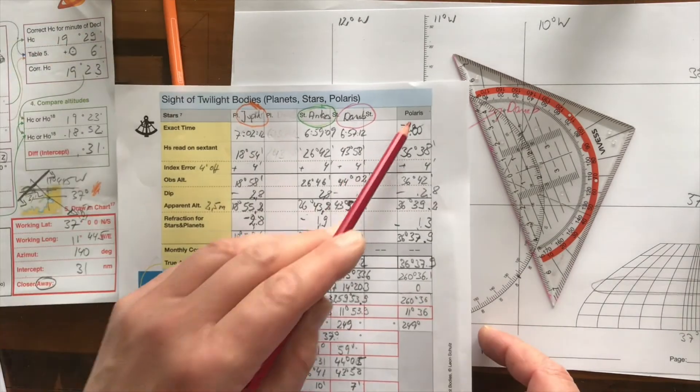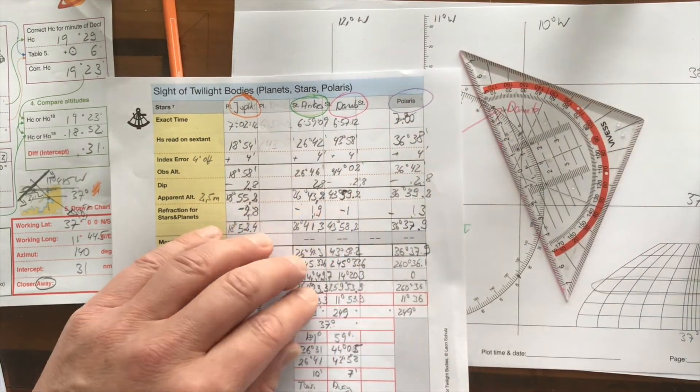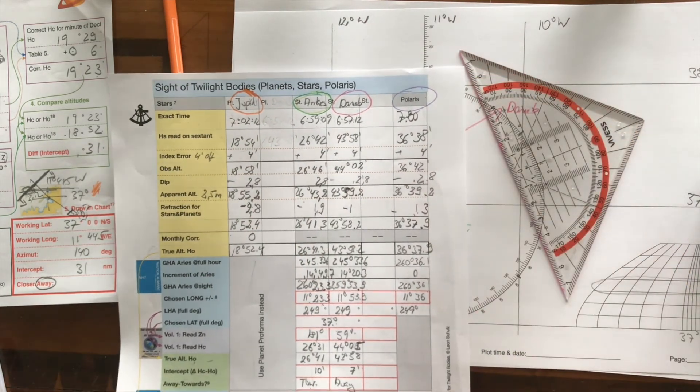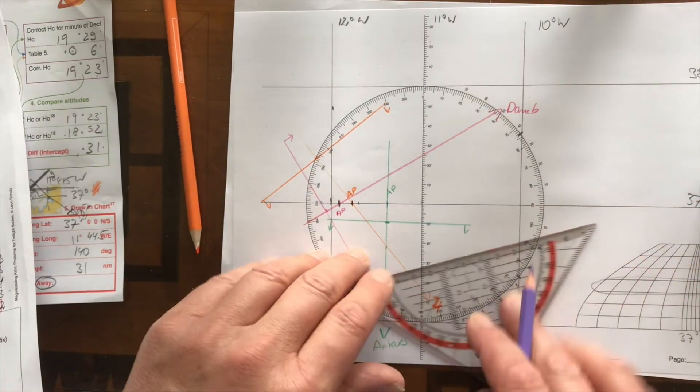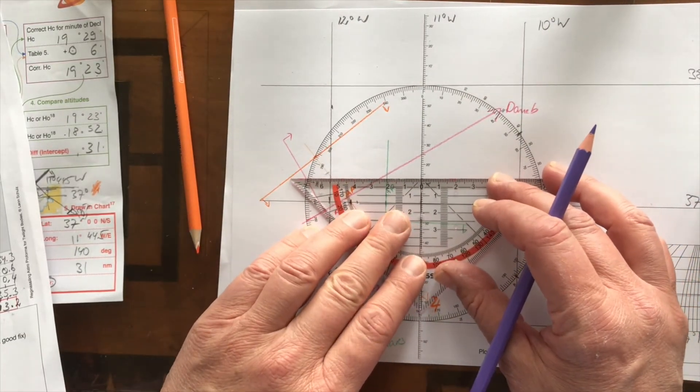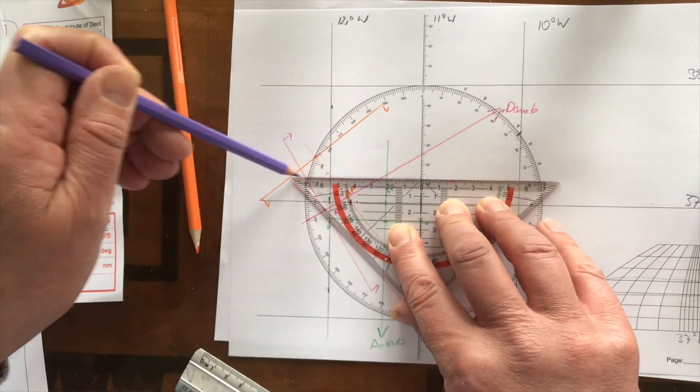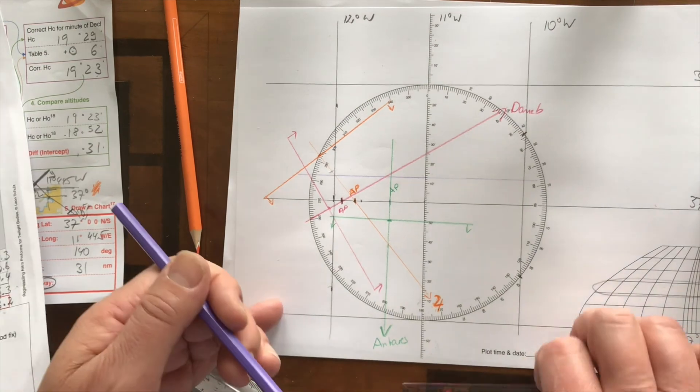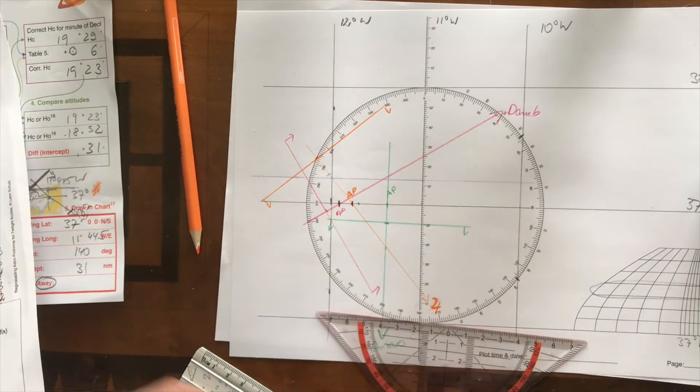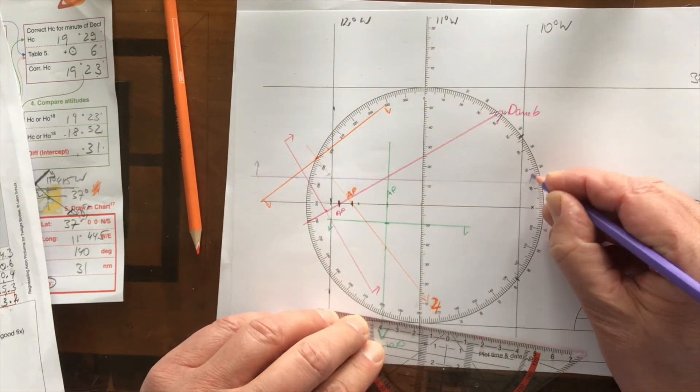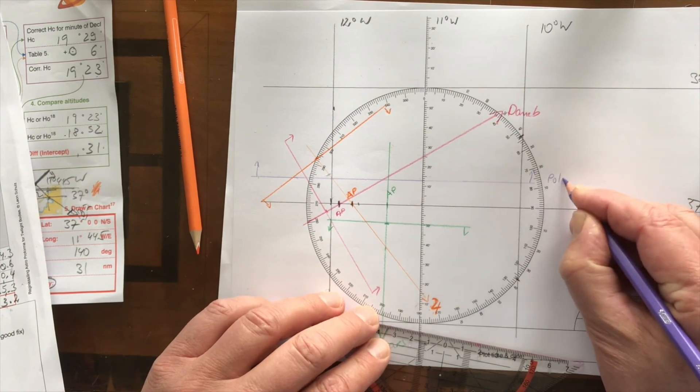Finally we have Polaris. Polaris gets a purple color and that gave us a latitude of 37 degrees and 13 minutes. So that's easy. 37 degrees and 13 minutes, that's here. So that is another position line. And if you want to be really precise you can even draw these arrows northbound because that's where Polaris is.